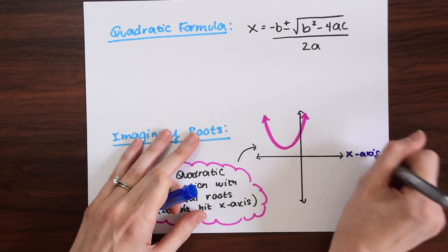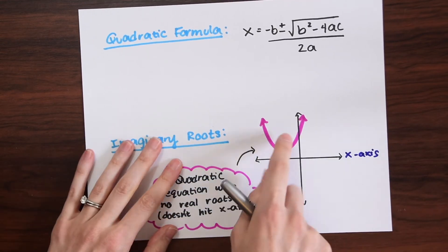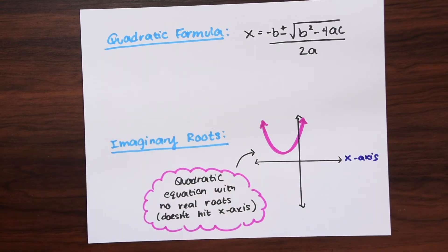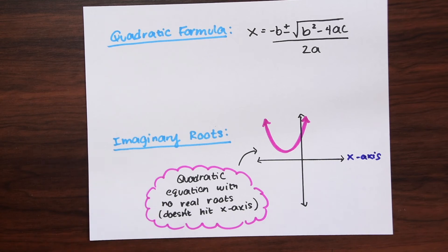This is the x-axis and we're used to having parabolas that hit the x-axis somewhere along here, where we're able to find its roots. With this, it's different and we have to use the quadratic formula to find those x values, those imaginary roots.